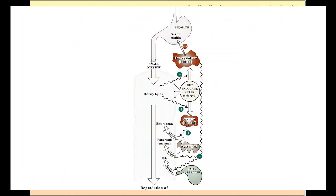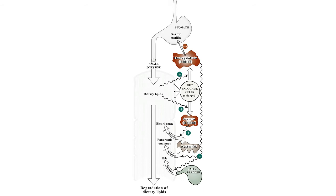Control of lipid digestion — pancreatic secretion of the hydrolytic enzymes that degrade dietary lipids in the small intestine is hormonally controlled. Cells in the mucosa of the lower duodenum and jejunum produce a small peptide hormone, cholecystokinin (CCK), in response to the presence of lipids and partially digested proteins entering these regions of the upper small intestine. Cholecystokinin acts on the gallbladder, causing it to contract and release bile — a mixture of bile salts, phospholipids, and free cholesterol — and on the exocrine cells of the pancreas, causing them to release digestive enzymes.